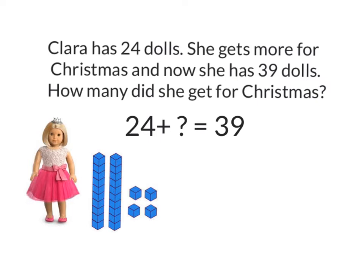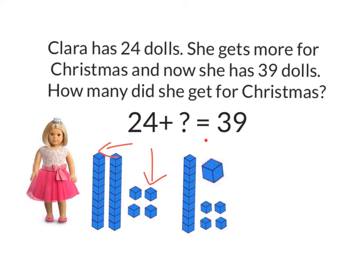I know that $24 is made up of two tens and four ones. So I want to work out how many more I need to get me to $39. At the moment I have two tens, but I need three tens, so I need one more ten so that I have three tens altogether. Now I have to think about my ones. I have four ones here, but I need to have nine ones altogether. I know that four and five more makes nine, so I need five more ones.